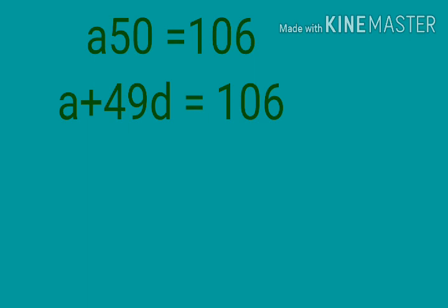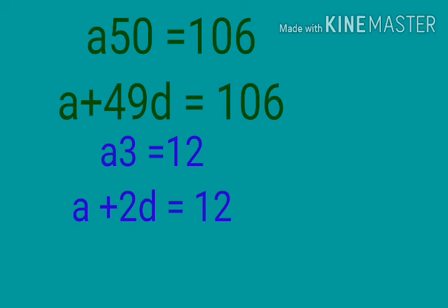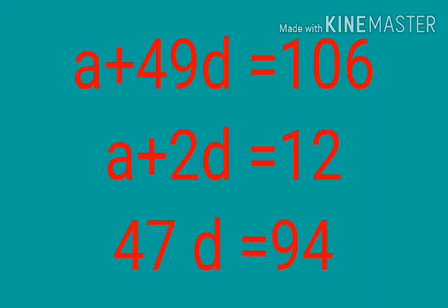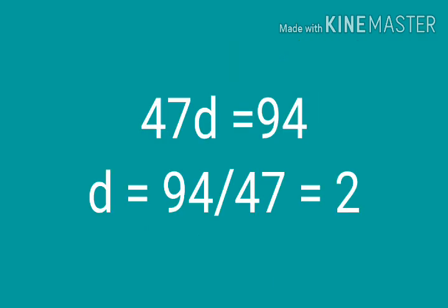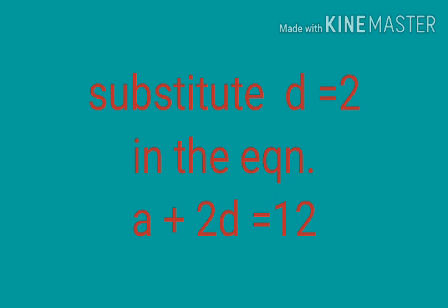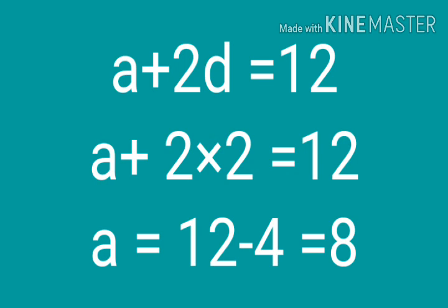A50 is given as 106, A3 is given as 12. A50 means A plus 49D equal 106. A3 is A plus 2D equal 12. Using the elimination method: 47D equal 94, so D equal 94 by 47 equal 2. Then substituting D equal 2 into A plus 2D equal 12: A plus 4 equal 12, so A equal 12 minus 4 equal 8. Now we have A equal 8 and D equal 2.